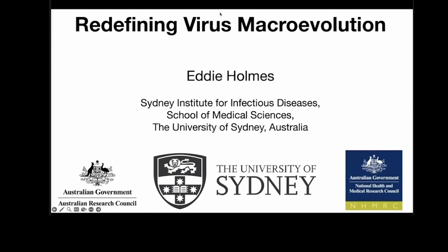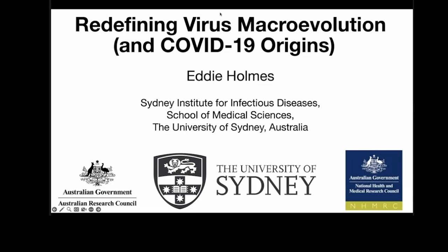I rather grandly gave a pompous title about trying to show how you can use metagenomics to redefine virus macroevolution. I'm going to start with that, but I'm also going to discuss something else, because every day of my life for the last three and a half years has been dominated by COVID-19 origins, which is an ongoing saga — stroke nightmare — for me. So the first half will be as advertised about virus macroevolution, and the second half will be possibly controversial stuff on COVID origins. I hope you enjoy the ride.